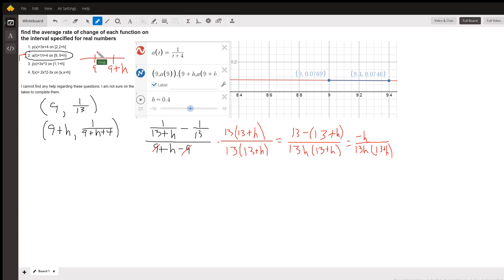But we want to find the average rate of change as the function, whatever it looks like, moves from here to here. And that really is the slope of this secant line right here.